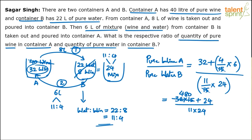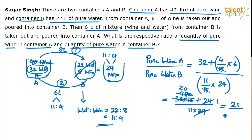A better approach: take 24 as common everywhere. In the numerator, 480 ÷ 24 = 20, and 24 ÷ 24 = 1, giving 20 + 1 = 21. In the denominator, 24 cancels to give 11. So the final answer is 21:11.